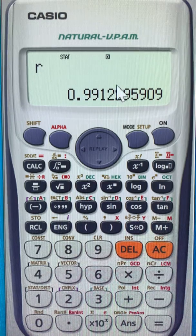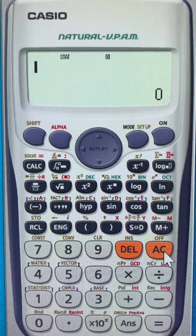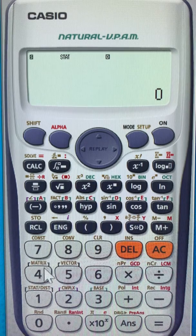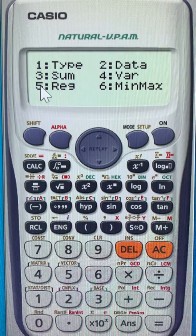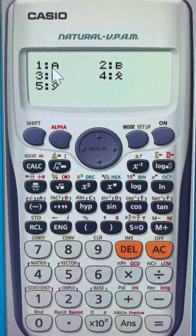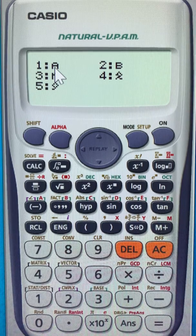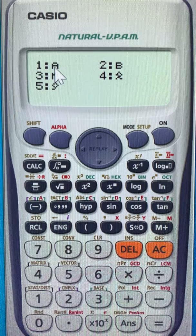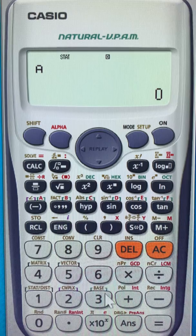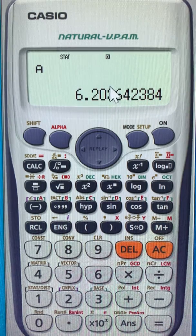Now AC. Now we want a and b, the regression coefficients. So I will do shift 1 again, and again regression number 5. So I'll do 5, and now I want a. Remember that this a we also called it b0 in the YouTube video, and that is the y-intercept of the regression line. So to get it you press 1 and then equal. So you see 6.20 and so on, but remember I took only the first two digits after the decimal.